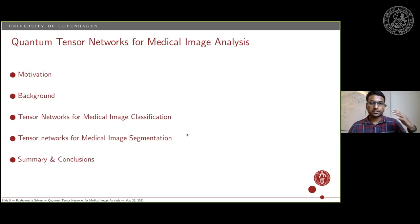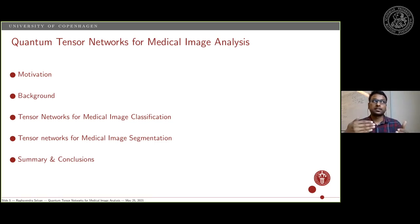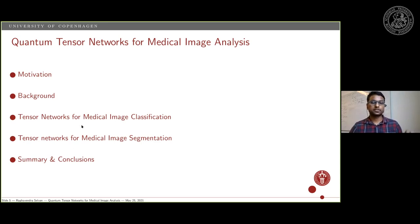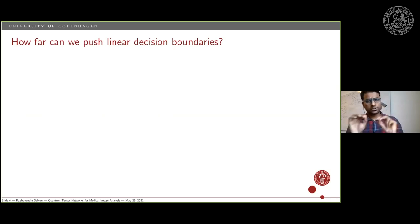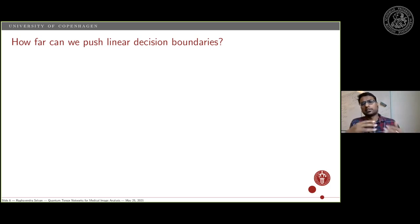Here's the overview of today's talk. I'm going to spend the first 10 to 15 minutes motivating and providing basic notations and the framework that will be used in two sets of applications — tensor networks for classification and then how we can extend them for segmentation. If there is one question we are trying to answer with this work, it's to see how far we can push linear decision boundaries. With a lot of deep learning going on, most models are highly nonlinear. But can we go back and see how far we can push these linear decision boundaries and see them work as well as deep learning models?